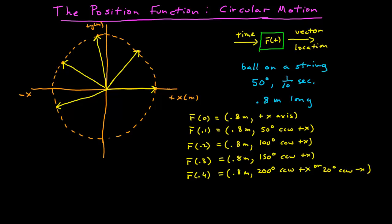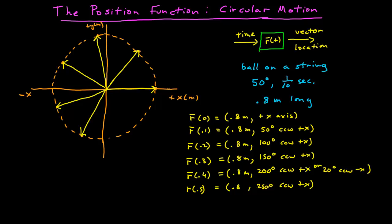I want to go at least once around the circle. So 50 degrees later — one tenth of a second — we're down here. The vector representing that position is that yellow line. R of 0.5 has a magnitude of 0.8 meters and is 250 degrees counterclockwise from positive x. We might also say it's 20 degrees clockwise from negative y.